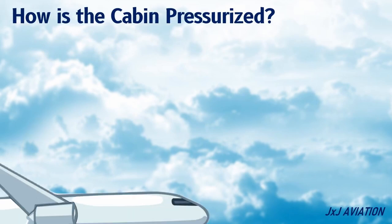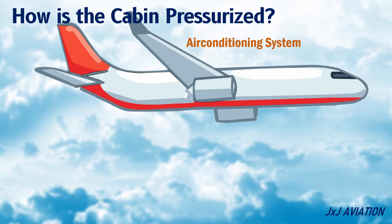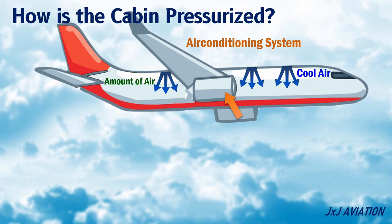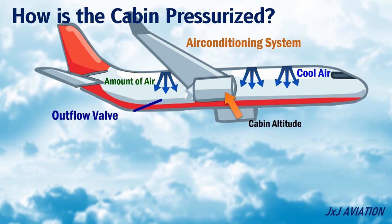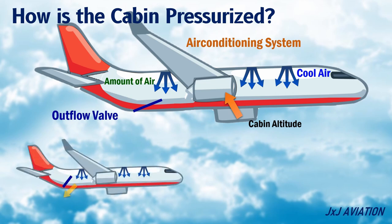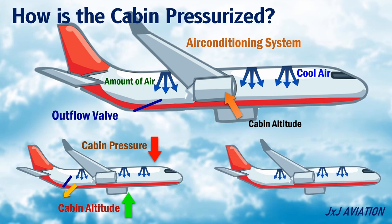Although the aircraft is flying at high altitudes, the cabin would feel like it is at a much lower altitude. In an aircraft, the air conditioning system takes bleed air from the aircraft engines and supplies the air inside the cabin after cooling it. The pressurization system controls the amount of air available inside the cabin. This is done with an outflow valve which opens or closes depending on whether the cabin altitude has to be increased or decreased. When the outflow valve opens, air is released from the cabin so the cabin pressure decreases, resulting in an increase in cabin altitude. When the outflow valve closes, the amount of air in the cabin increases so the cabin pressure increases and the cabin altitude decreases.